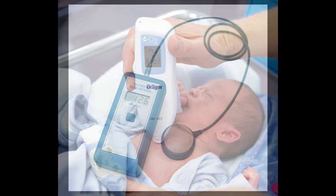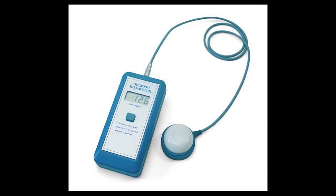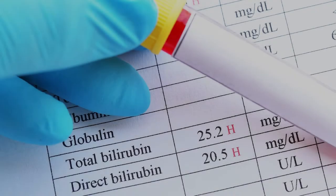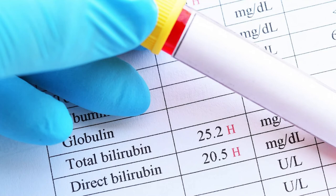Bilirubin levels are checked by either skin or blood tests. Skin checks are performed with a bilimeter — a light meter which sends out white light into the skin and measures the intensity of certain wavelengths of reflected light. The measured amount of reflected light is proportionate to the amount of bilirubin in the bloodstream.